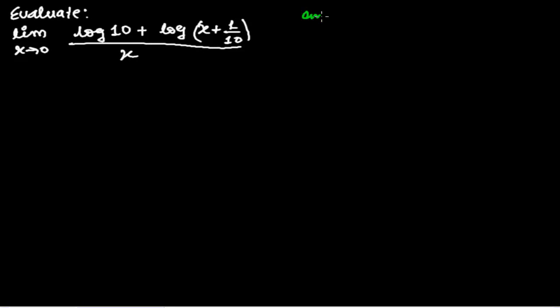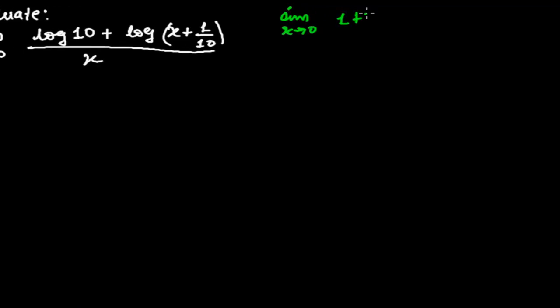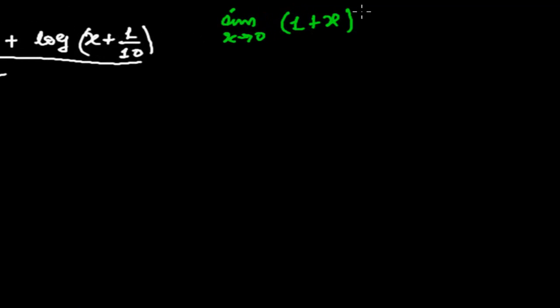That is, limit when x tends to 0, 1 plus x whole to the power 1 upon x equals e. That's a small e, called the Euler constant, and its value is about 2.71828 something like this.